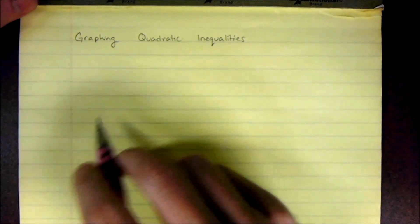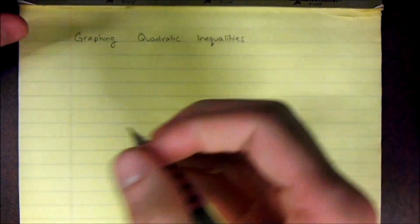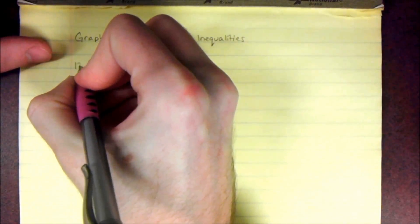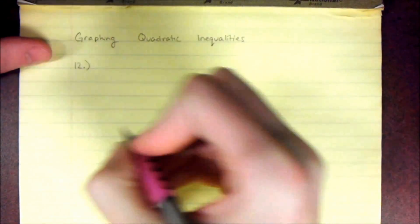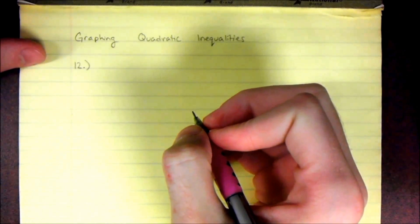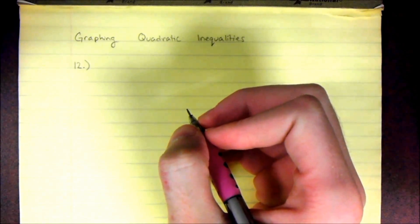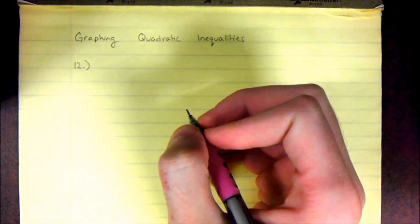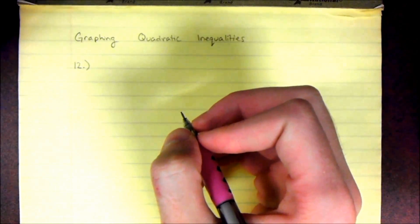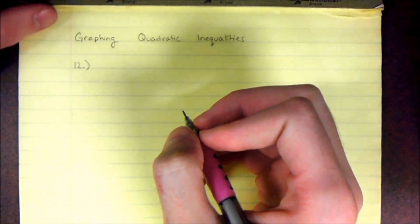Today I want to look at how to graph quadratic inequalities. It's basically going to be practicing graphing regular quadratics, and then adding in the aspect that sometimes your lines are going to be dotted, sometimes they're going to be solid, and sometimes they're going to have shading. If it's an inequality you're always going to have shading.